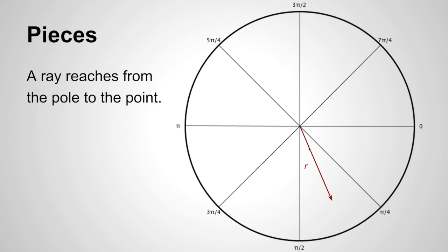Now the length of that ray, r, is called the radius of that ray. So we need to know the radius, how long this ray is, in order to determine the point.